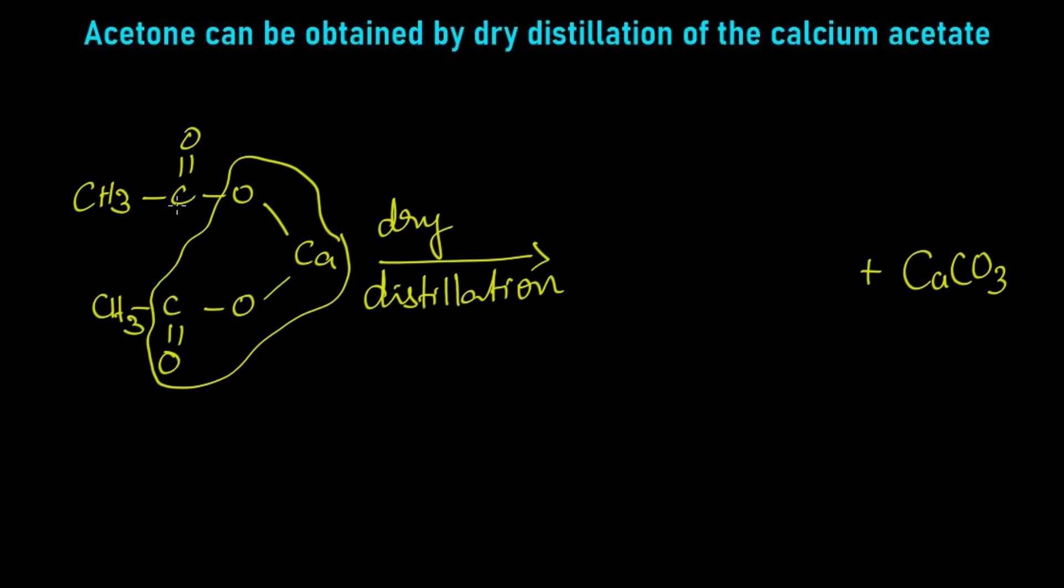The remaining thing, CH3-C double bond O and CH3 will get attached together. So we get CH3-C double bond O-CH3. What is this? This is acetone.